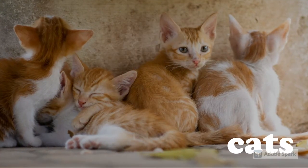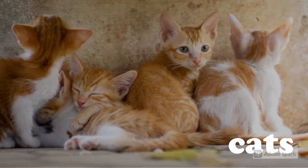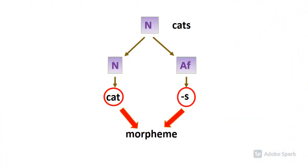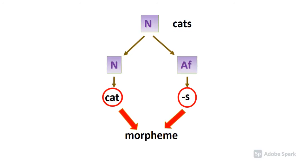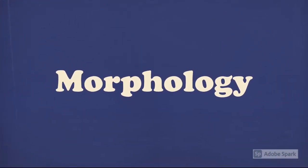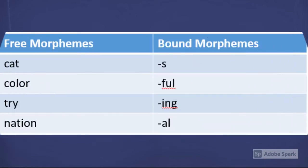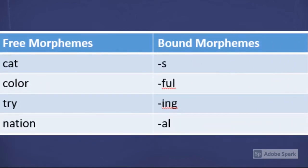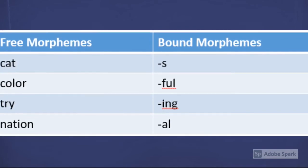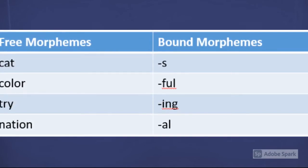To get an idea of what morphemes are, let's take a look at a simple word such as cats. Using a word tree, we can derive each part of the word cats into cat and s. Each of these components is considered a morpheme. The field of linguistics which studies how morphemes connect together to create new meanings is called morphology. There are two types of morphemes: free morphemes, which are units of meaning that can stand by themselves, and bound morphemes, which are units of meaning which cannot stand by themselves.